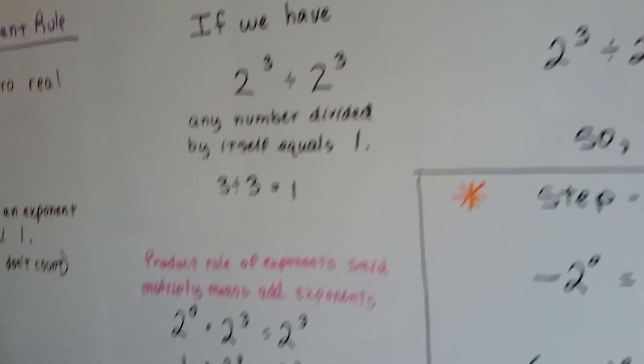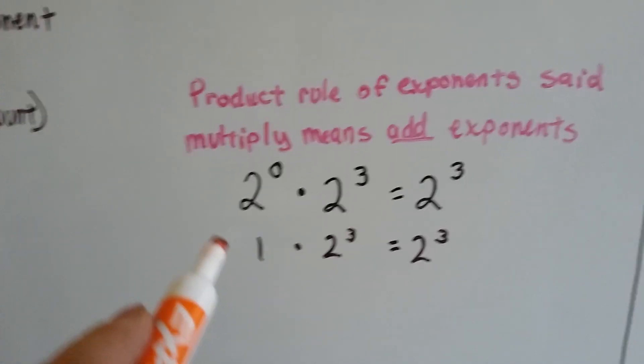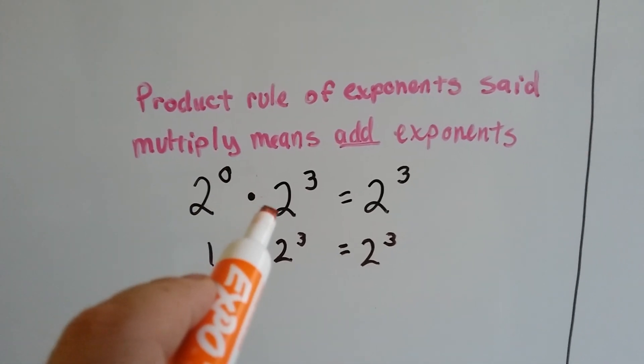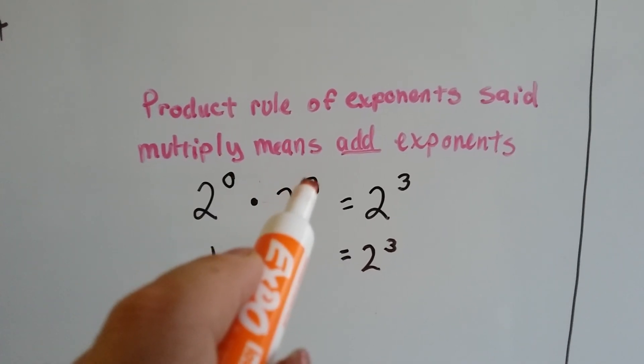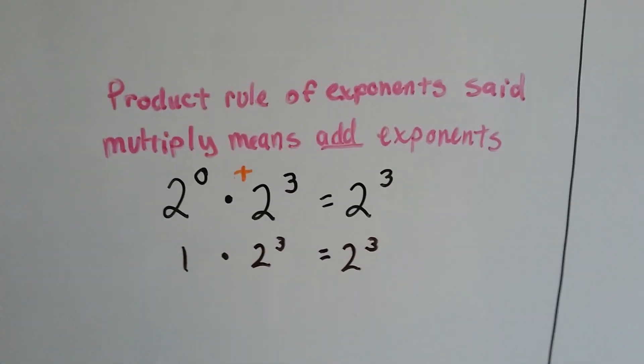Do you remember in the product rule of exponents it said multiplication means adding the exponents? So if we've got the same base, 2, and this is 2 to the zero power, and we're multiplying it to 2 to the third power, 0 plus 3 is going to be 3. Because we add the exponents.